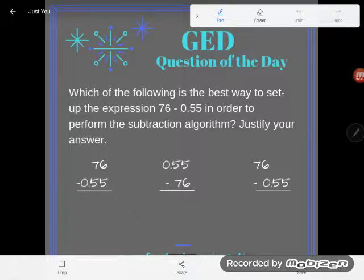It says which of the following is the best way to set up the expression 76 minus 55 hundredths? Yes, that's how you read that number, 55 hundredths.